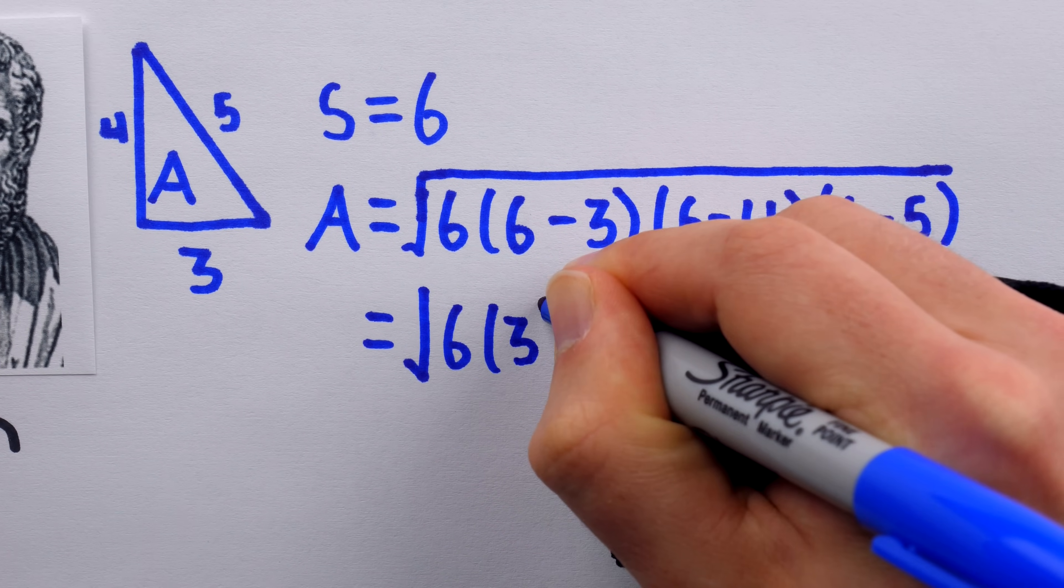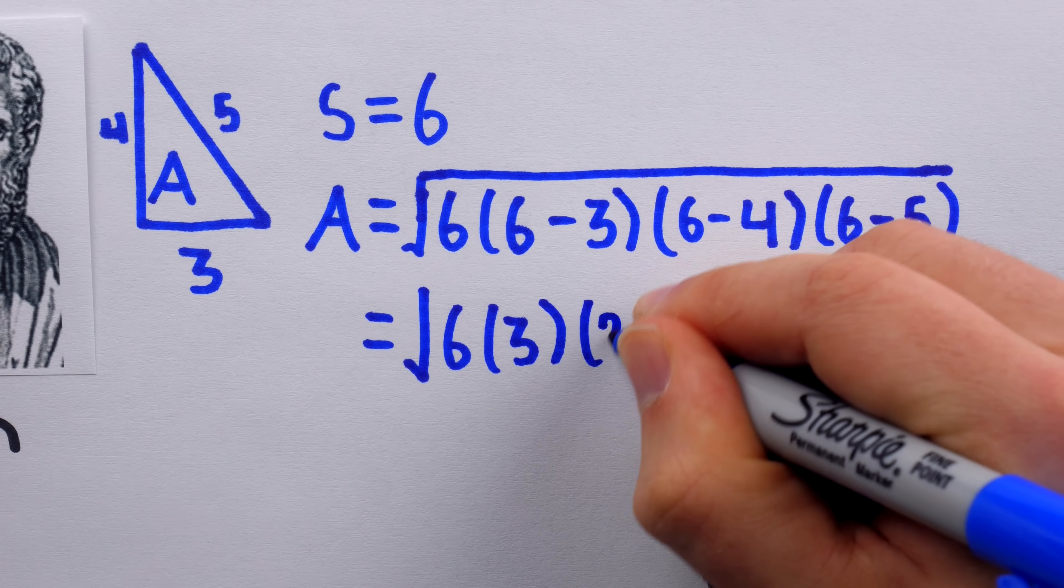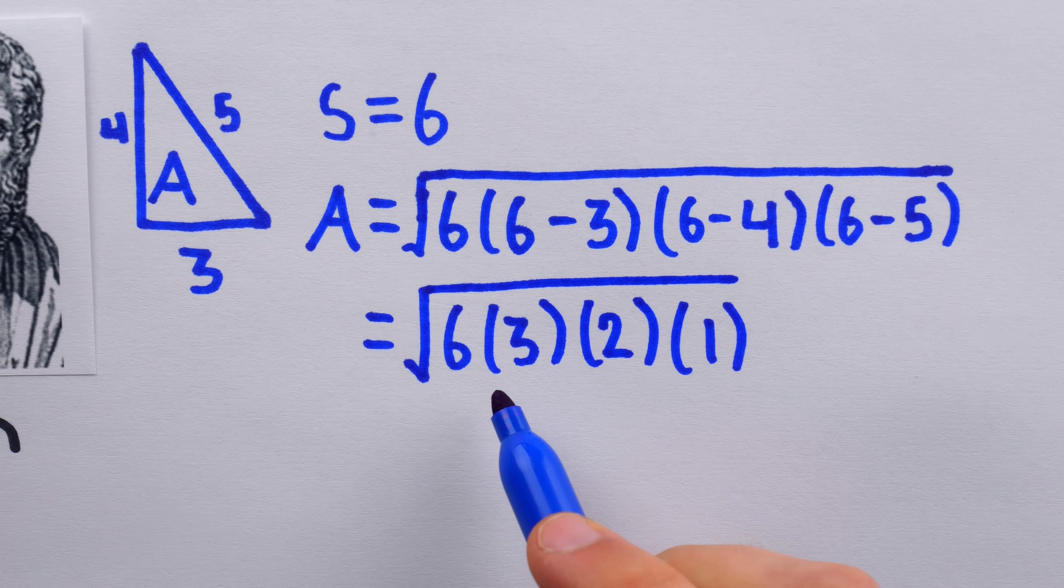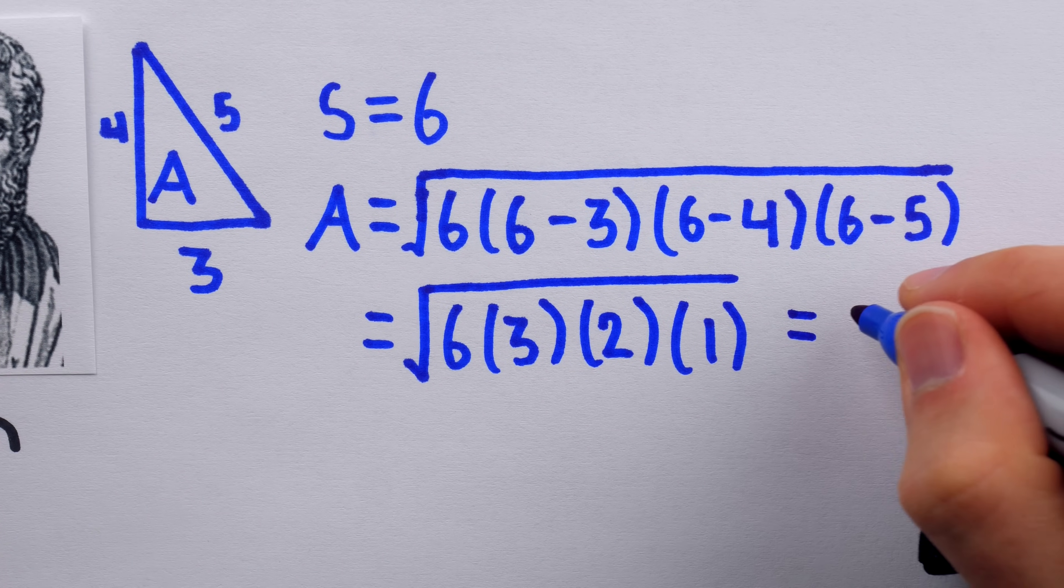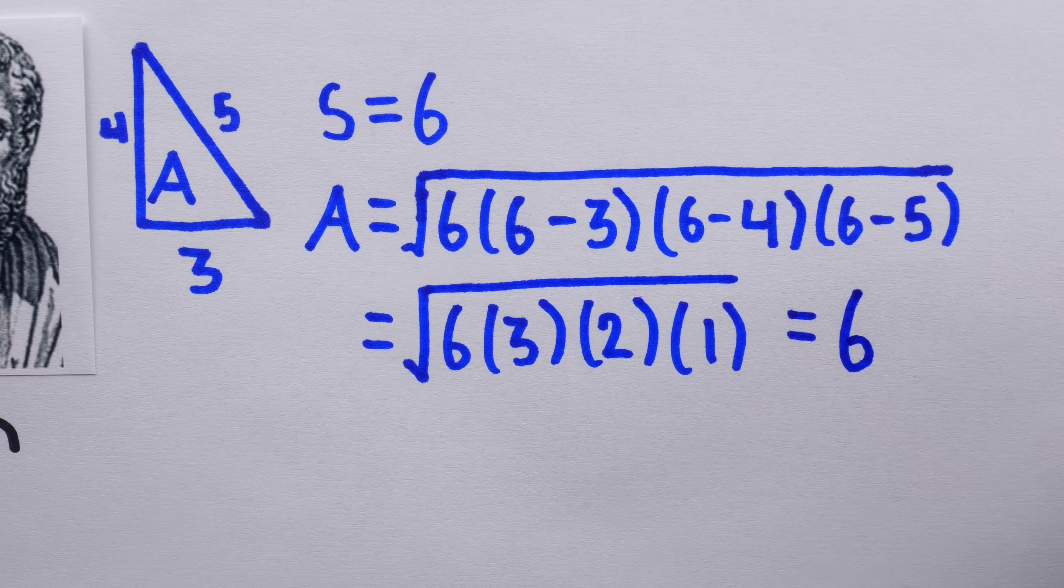This, of course, turns out to be a nice and easy, friendly example. This is the square root of 6 times 3 times 2 times 1. That's the square root of 36, so in fact, the area of the triangle is 6.